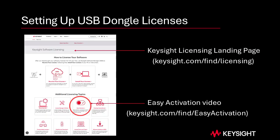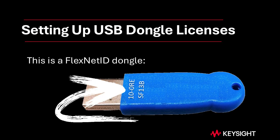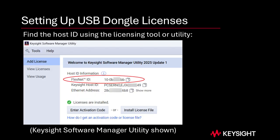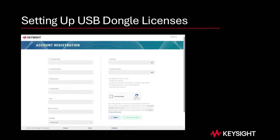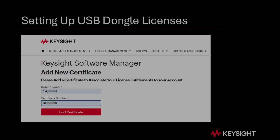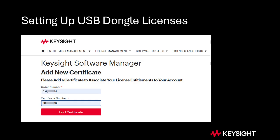That Easy Activation video is available from Keysight.com/find/licensing as shown. To determine your dongle ID, either read the dongle ID directly from the physical key or from the licensing tool, most often KSMU, as shown. Continuing with Step 3, go to Keysight.com/find/software-manager to request a license file. If you haven't created an account on Keysight's software manager yet, you'll need to do so. Follow the instructions on screen to enter your order number, certificate number, and dongle ID.